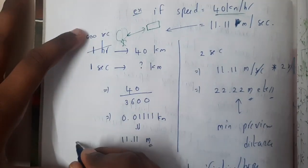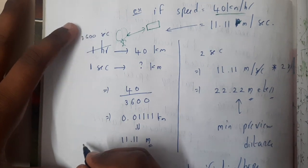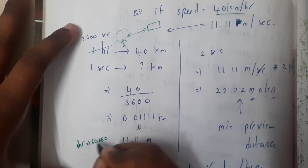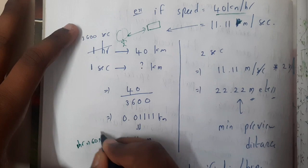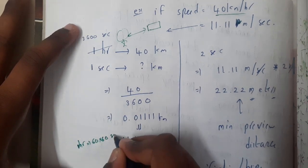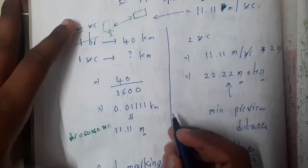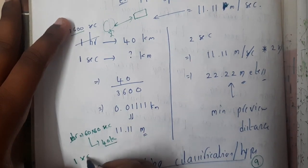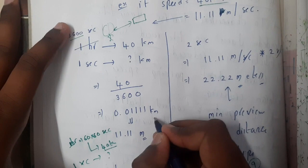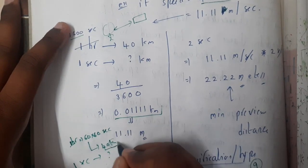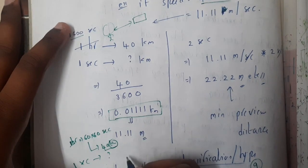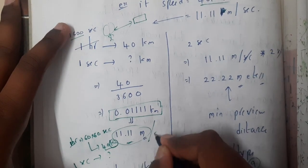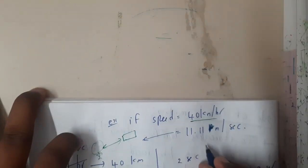One hour equals 60 × 60 = 3600 seconds. So 3600 seconds corresponds to 40 kilometers. Cross-multiplying, in one second you travel 40/3600 kilometers. Converting to meters by multiplying by 1000, we get 11.11 meters per second.